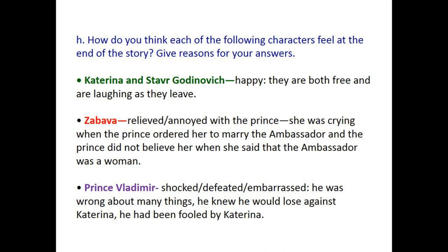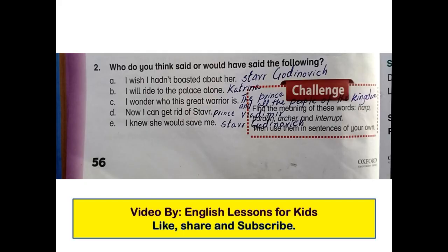Prince Vladimir: shocked, defeated, and embarrassed. He was wrong about many things. He knew he would lose against Katrina and he had been fooled by her. Question number two: who do you think said or would have said the following? A: 'I wish I had not boasted about her' — Steve Gardevich. B: 'I will ride to the palace alone' — Katrina. C: 'I wonder who this great warrior is' — the prince and all the people of the kingdom. D: 'Now I can get rid of Steve' — Prince Vladimir. E: 'I knew she would save me' — Steve Gardevich.